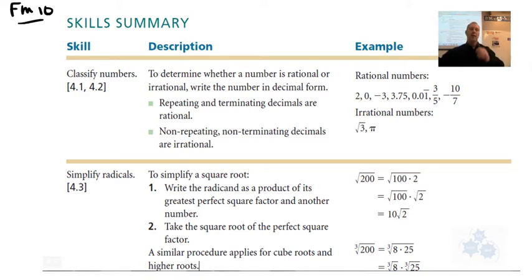So let's just go over real quickly what we did in 4.1 and 4.2. We talked about rational numbers and irrational numbers. So if you're given a list of numbers, how could you determine whether they're rational or irrational?